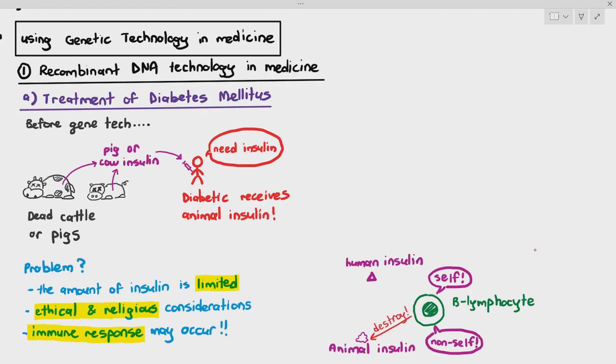And if it identifies it as non-self, what will happen? Our lymphocytes will attack it. Now, is it a big thing? Is it a big deal if it attacks it? Well, yeah, it is, because number one, it can cause allergic reactions in your body. Number two, also, if they destroy the animal insulin, the insulin is not able to work in the person. It's just a waste when you inject the insulin into your body, because it will eventually get destroyed by our immune system. So, what's the point?